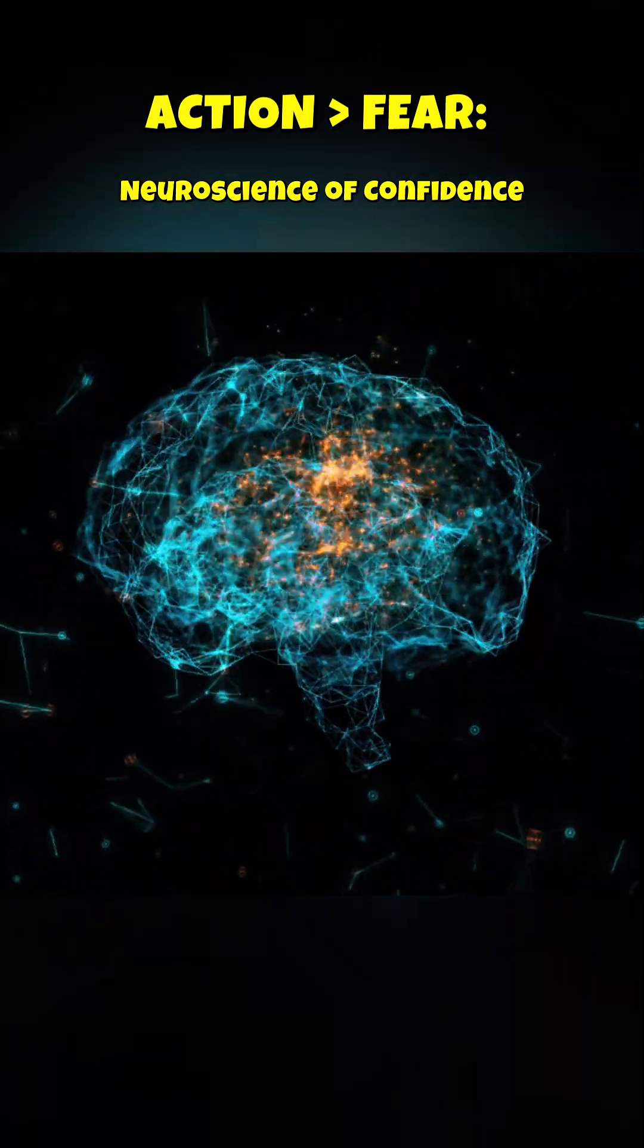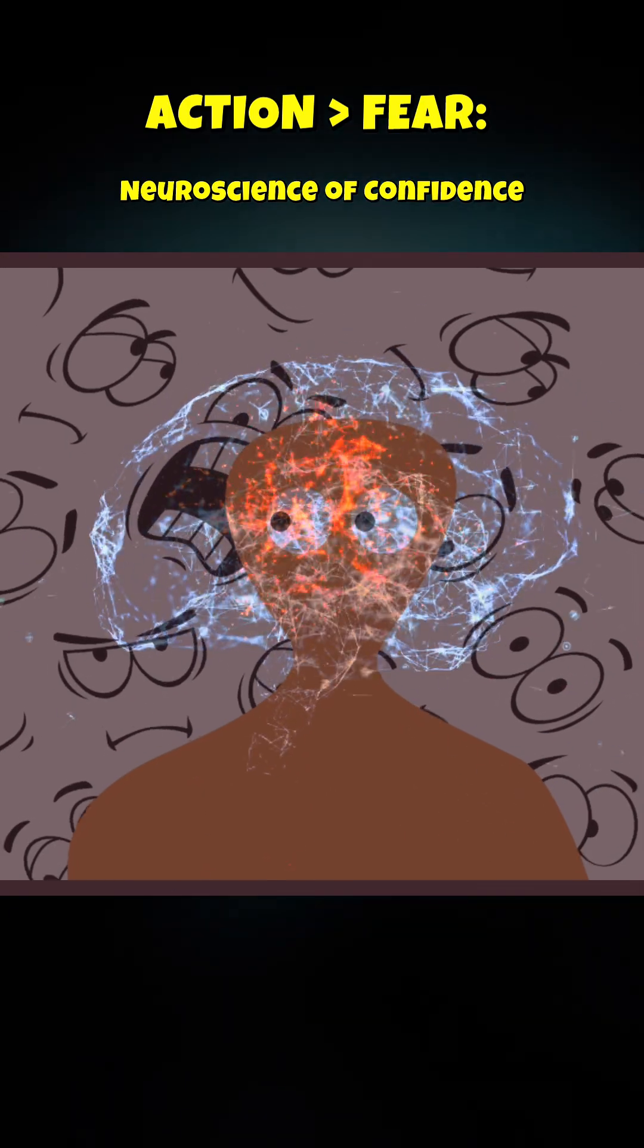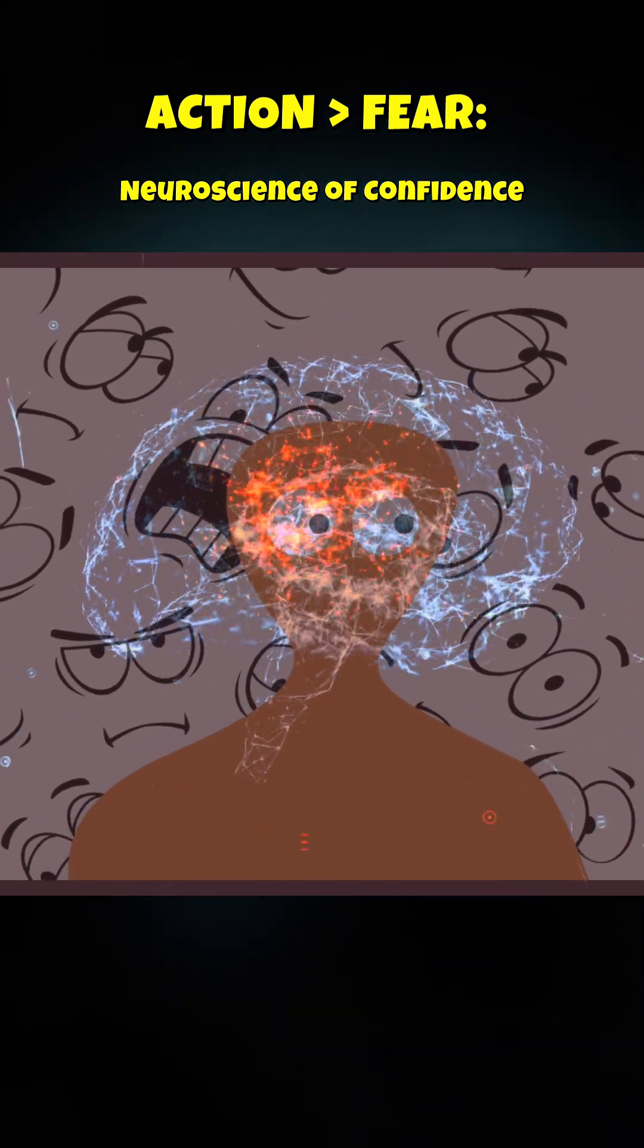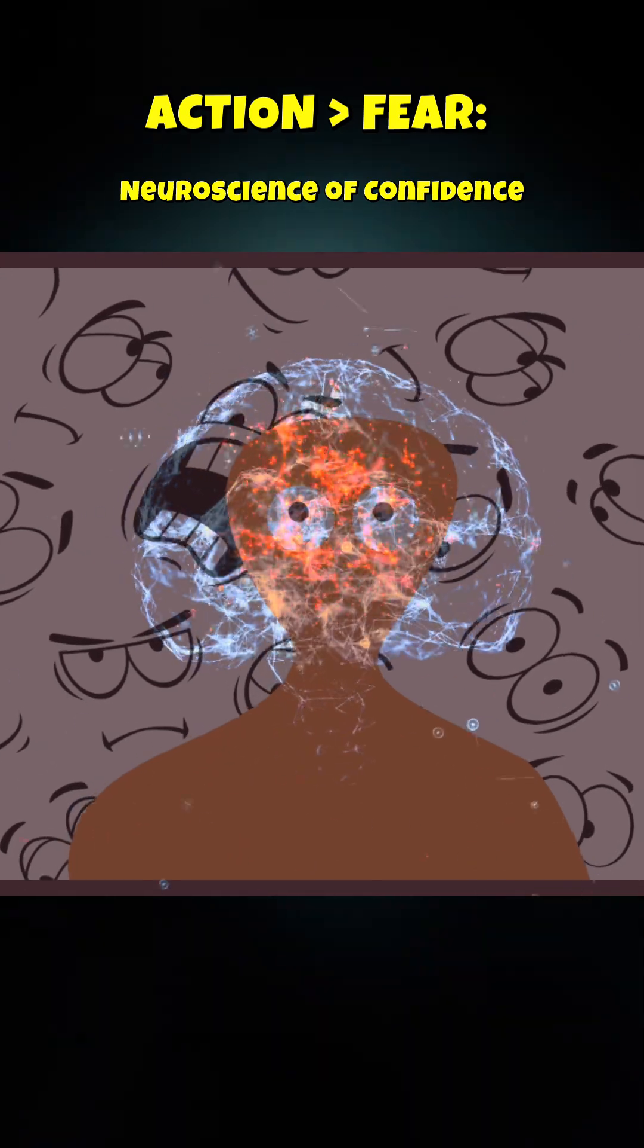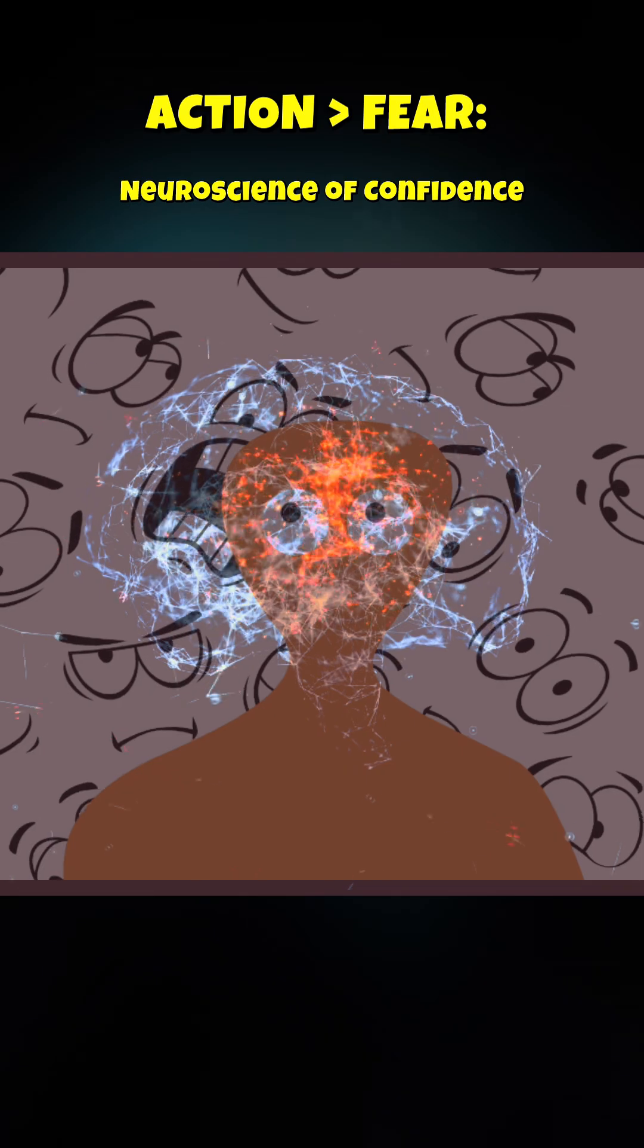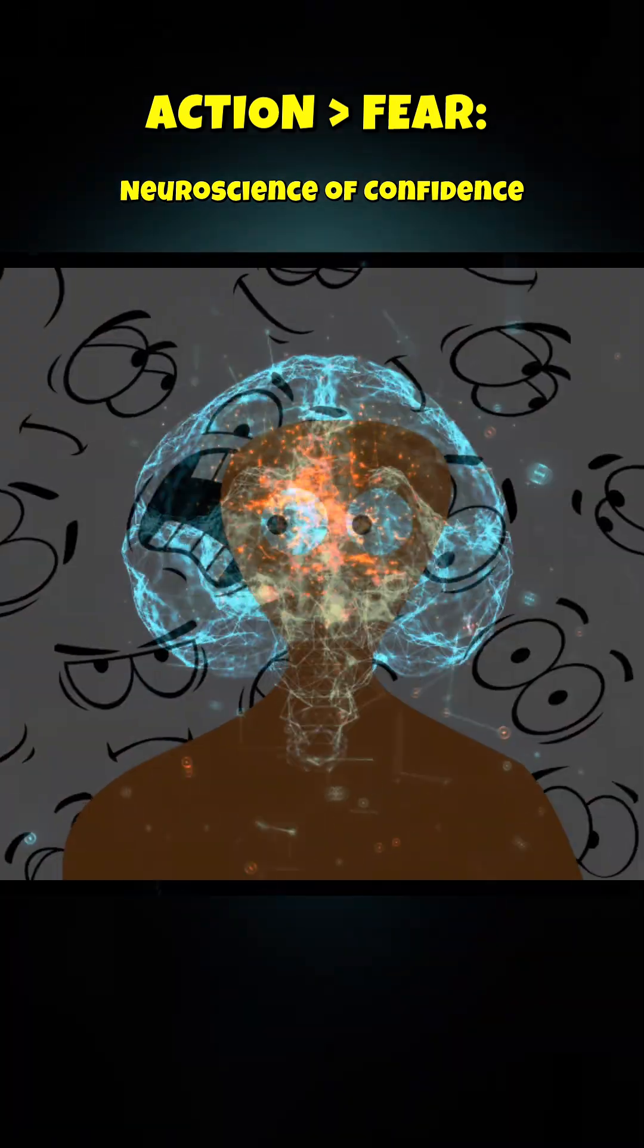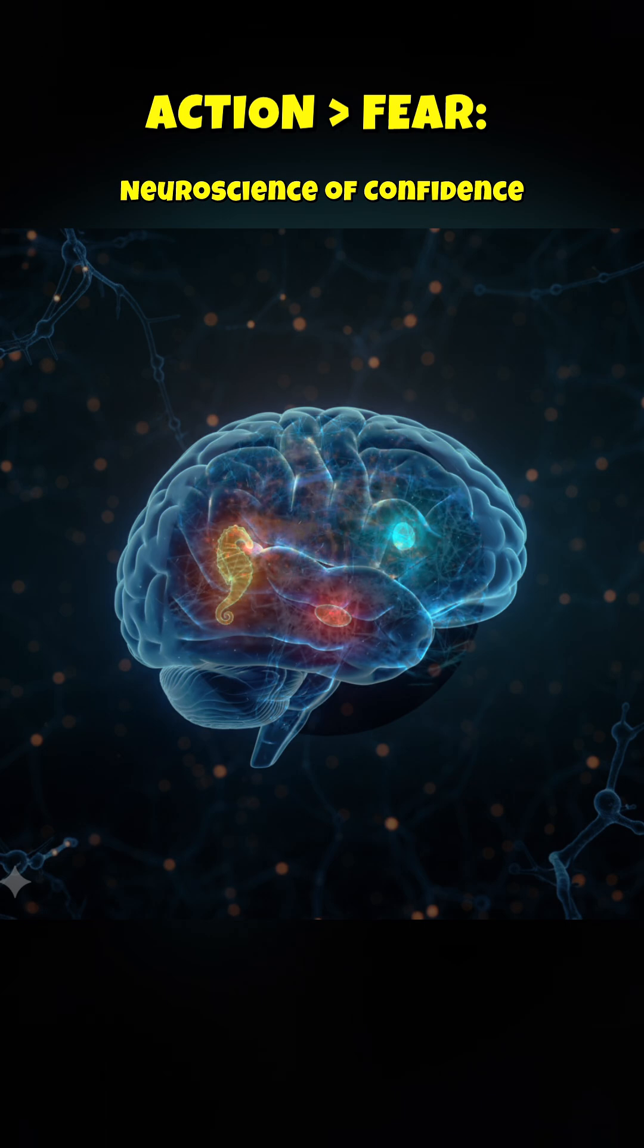The biggest confidence killer is the inner critic, that voice of self-doubt. When that voice is loudest, your amygdala is screaming. To counter this, practice cognitive reframing. Ask yourself, is this thought a factual predictor, or is it an old fear-based habit? By consciously interrupting this loop, you strengthen the prefrontal cortex's ability to override the fear center.